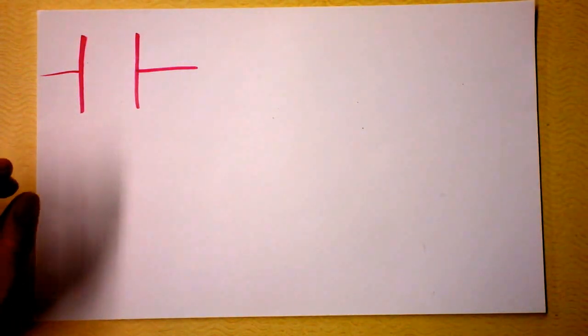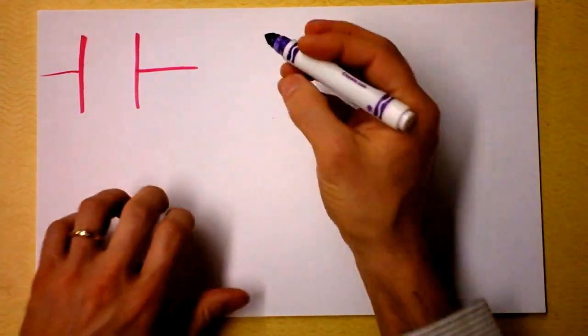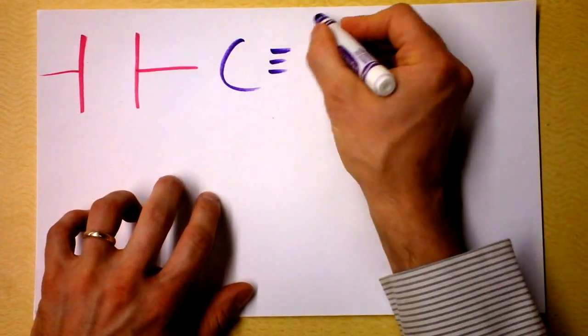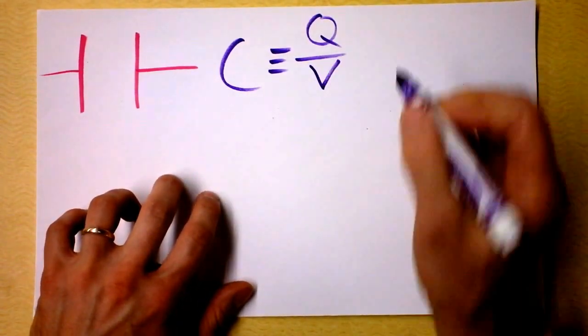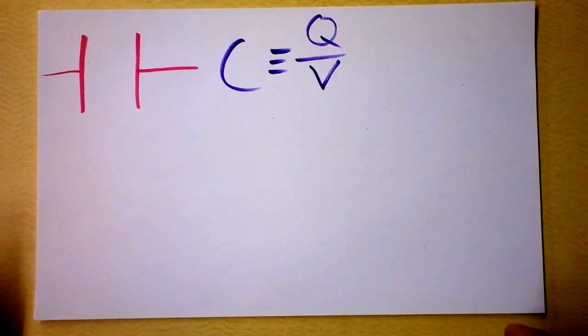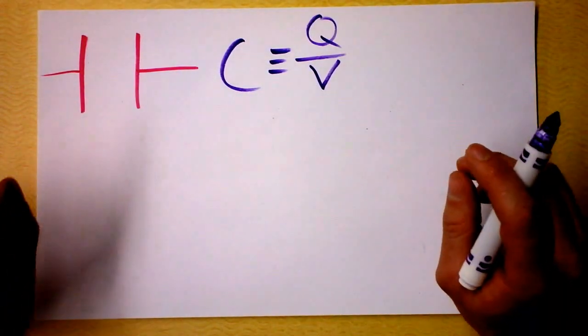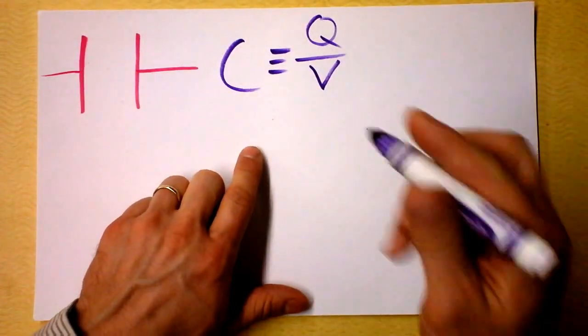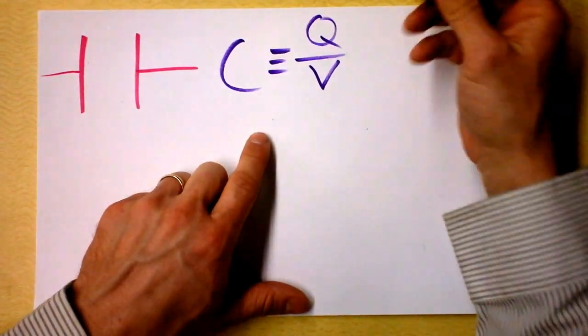So let's define capacitance. And this is the definition of capacitance. Capacitance is charge over voltage. And that's a super misleading way of writing it. I absolutely, absolutely hate this definition of capacitance.